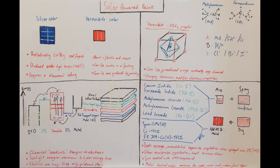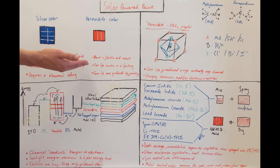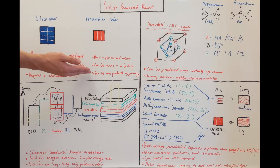Silicon solar panels are extraordinarily popular at the moment for domestic and commercial use, and for good reason. Cost is decreasing and efficiency is increasing. But what if there was a better alternative in the form of a paint? Perovskite solar paint can be used to produce panels that are flexible and thin, and they can be made in a normal factory setting and mass produced by a printer.